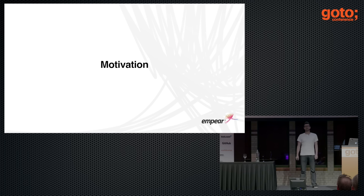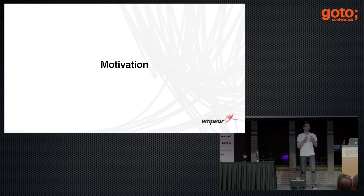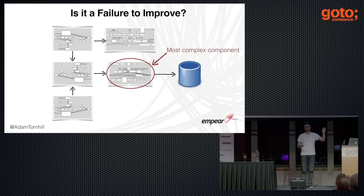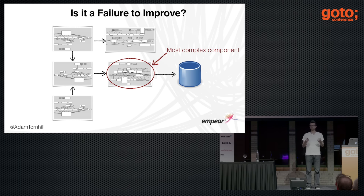I was once given the advice that when you give a presentation, always start with a motivating example. Because if I do that, you will know why you should listen, why you should care, why this is important. So I went home and thought that if a motivating example is a good thing, more examples must be even better. So today, you will get not only one, but three different examples. And the first example is a personal story — a personal failure, but the interesting thing is I failed by actually improving something.